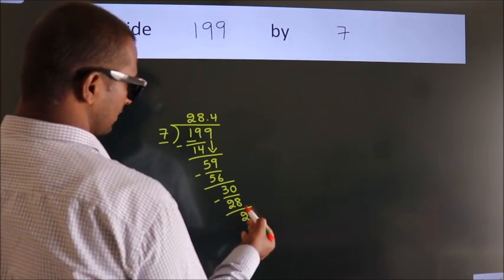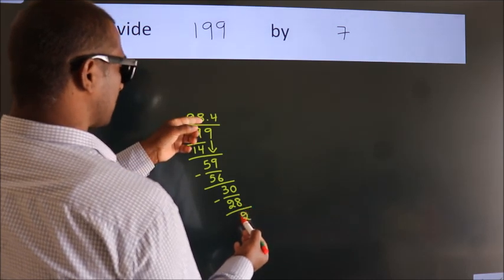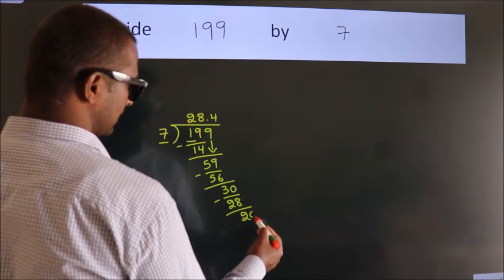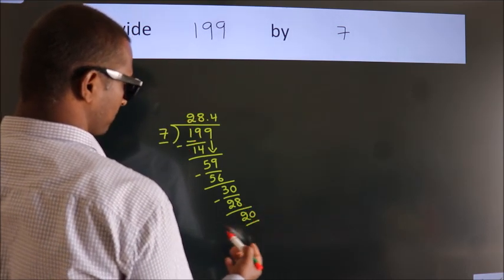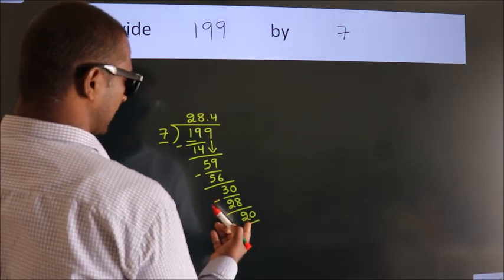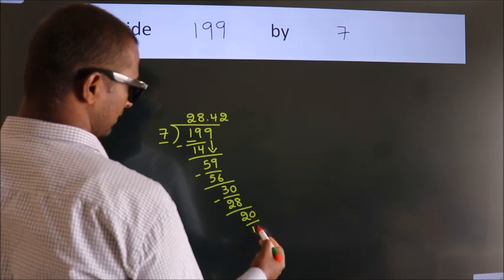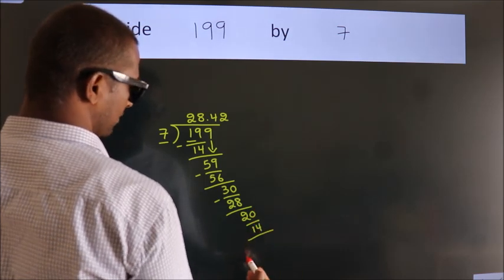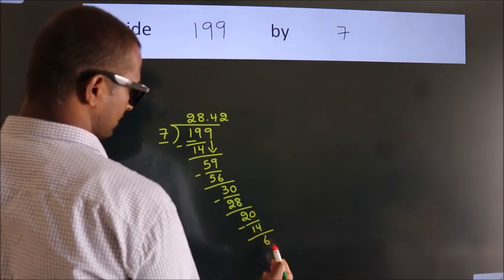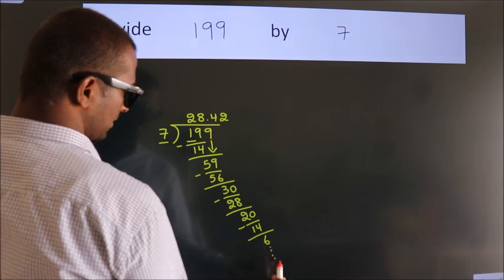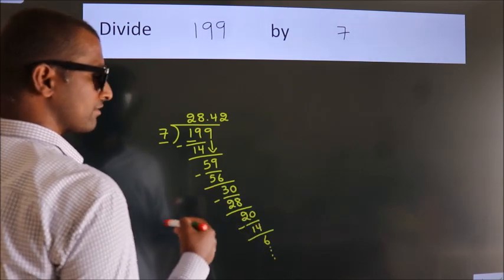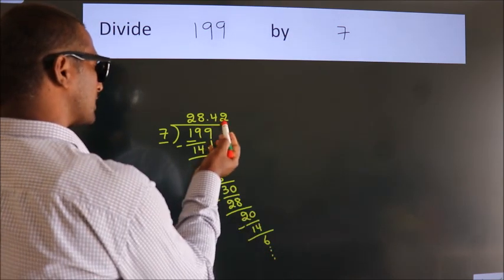After this, we already have the decimal. So directly take 0. So 20. A number close to 20 in 7 table is 7 twos, 14. Now we subtract. We get 6. And the division continues. It is enough if we do up to 2 decimal places.